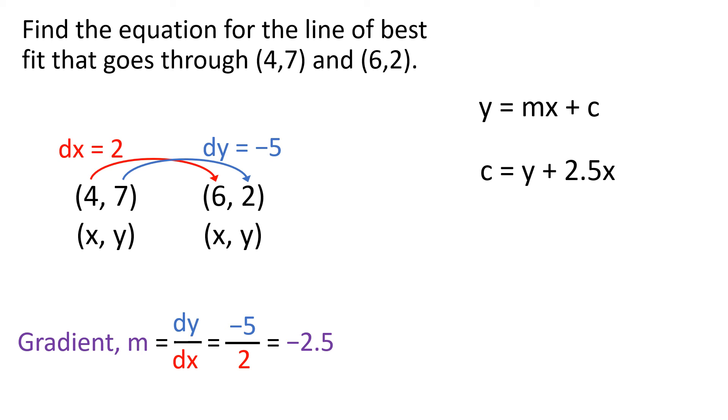We can tidy that up. We now have c equals y plus 2.5x, and we'll just select one of our points, one of our x,y points, and substitute those values in. We're going to go for x equals 4, y equals 7. Put those values in and c, the intercept, equals 17. So overall we have y equals minus 2.5x plus 17.